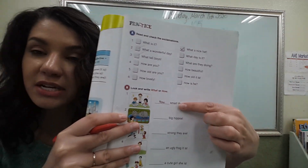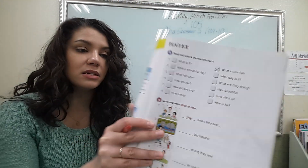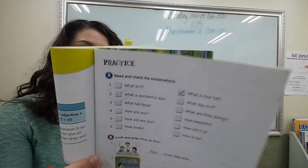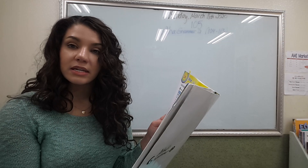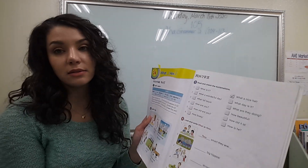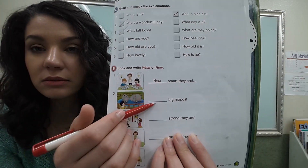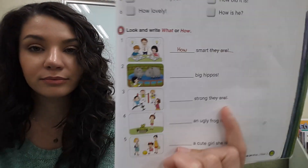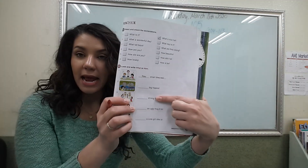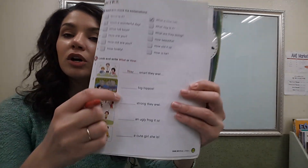Look at exercise B: 'how smart they are' — remember, we don't need 'they are.' If we just say 'how smart,' there is no noun, so use 'how.' Number two: 'big hippos' — 'hippos' is a noun, so use 'what.' Number three: 'strong they are' — imagine 'they are' isn't there; without it you have no noun, so use 'how.' 'How strong.' Number four: 'an ugly frog it is' — cross out 'it is.' 'An ugly frog' — 'frog' is a noun, so when we have a noun present, we use 'what.' What an ugly frog!